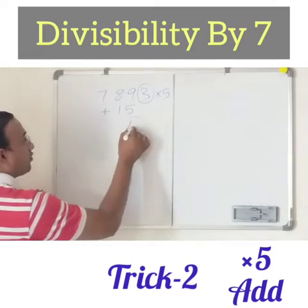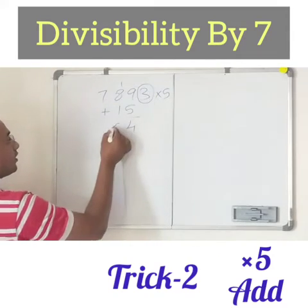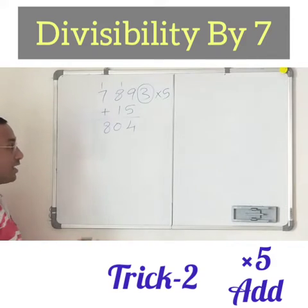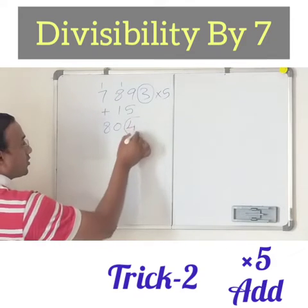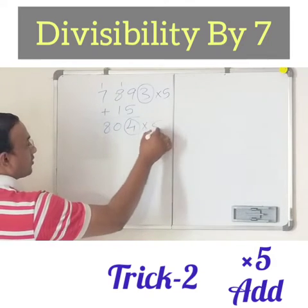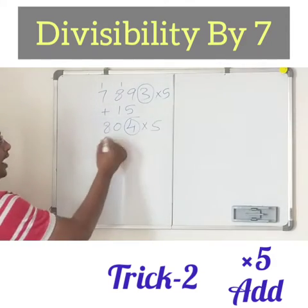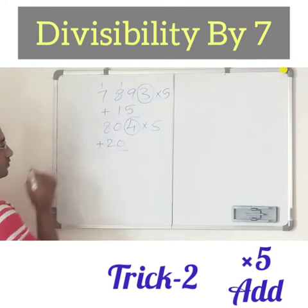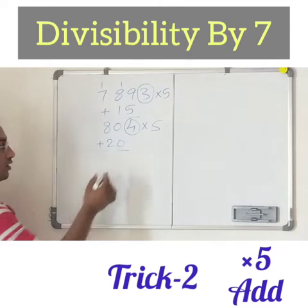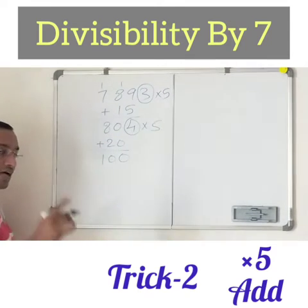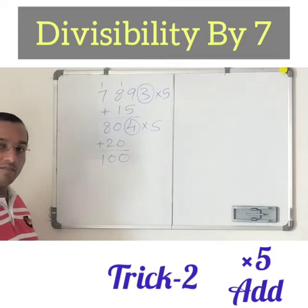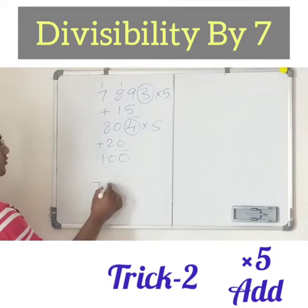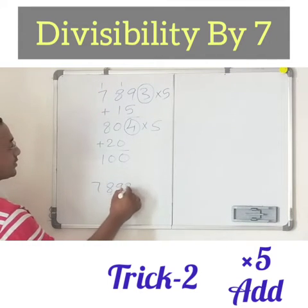So what do you get? We get 804 — wait, let me correct: 789 plus 15 gives us 804. As the number is still big, go with the process once again. Take the last digit 4, multiply by 5 to get 20. Add to the remaining digits. What do you get? 100. Is 100 divisible by 7? No. Therefore, 7893 is not divisible by 7.